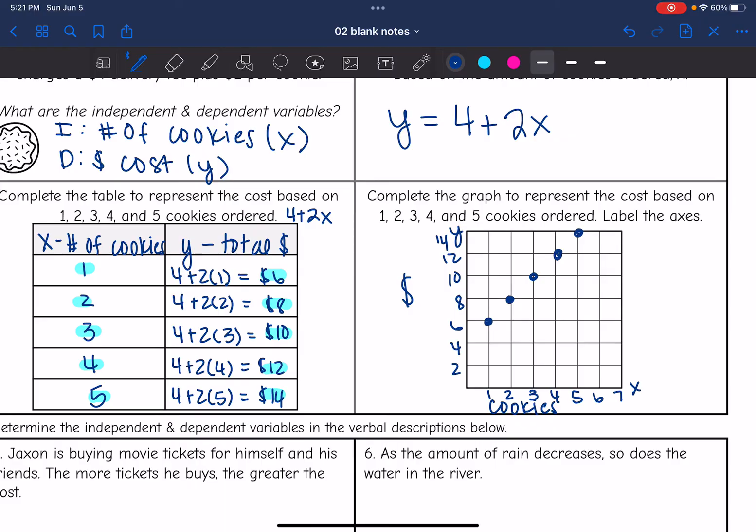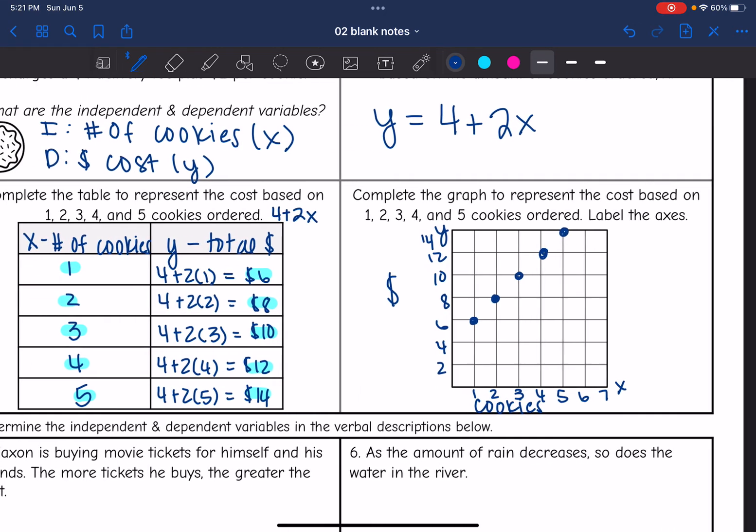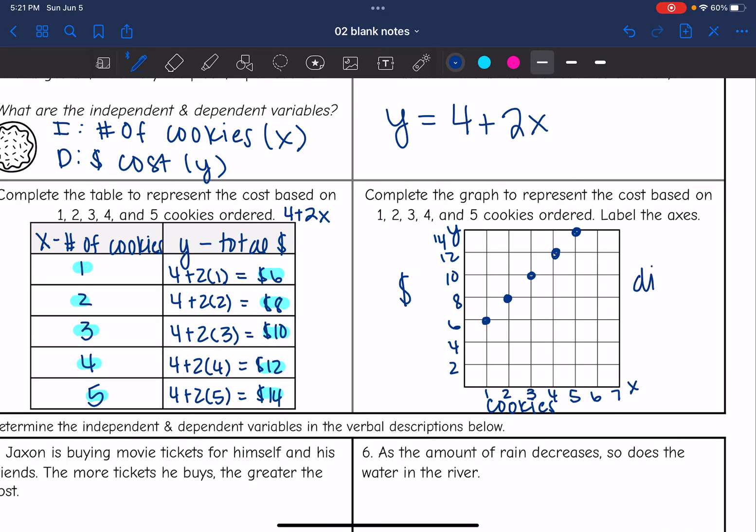And I am not going to draw a line to connect these, because this is what we call a discrete relationship. They're not going to let us order like 1 and a half, or 1 and a quarter, or 2.1 cookies. It's only going to be 1, 2, 3, 4, or 5 cookies that they let us order. So that's what we call discrete. It is disconnected data.